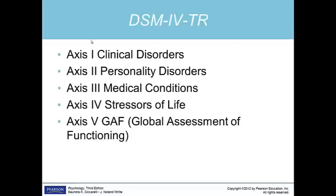For example, say a person named April comes into therapy. On Axis 1, she would be given a diagnosis of major depressive disorder. Axis 2 would be borderline personality disorder. Axis 3 would be diabetes. Axis 4 might note that she recently terminated her engagement. And on Axis 5, her GAF would be a score of 55.